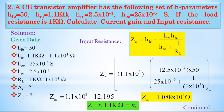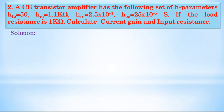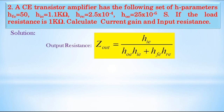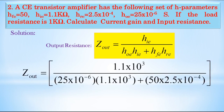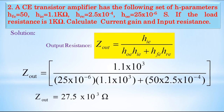We can also calculate output resistance from the given data. Zout = HIE / (HOE × HIE + HFE × HRE). Substituting the values, we get output resistance Zout = 27.5 × 10³ ohms. In this way, we can calculate different transistor parameters using H parameters. Thank you.